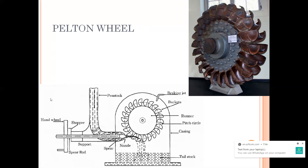The third part is your casing. It does not have any functionality. It makes sure that the water does not splatter outside and it directs all the water to your tail race. So it is just a covering — it is non-functional.